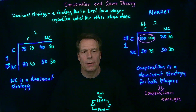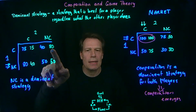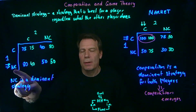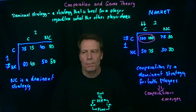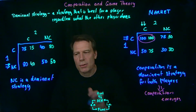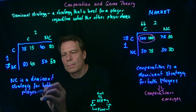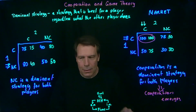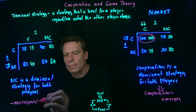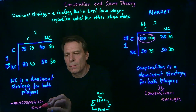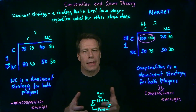The same incentives hold for Player 2. If she thinks Player 1 is going to conserve, she's in the top row choosing between 75 and 80 — 80 is better. If she thinks Player 1 is not going to conserve, she's in the lower row choosing between 40 and 50 — 50 is better. So not conserving is a dominant strategy for both players, and as a result non-cooperation emerges — both of them are going to overfish and the lake will be depleted.